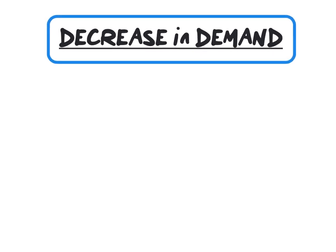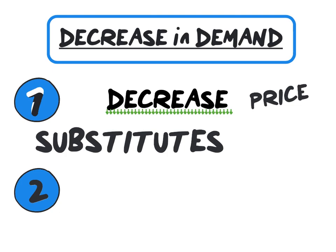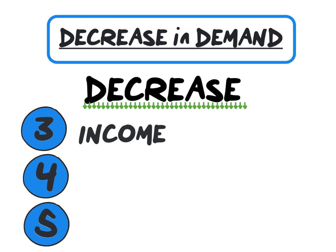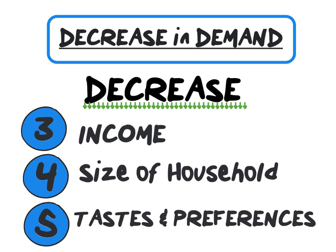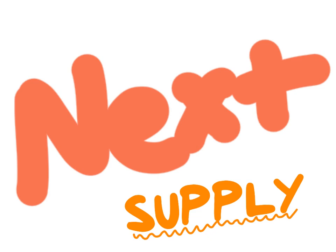To summarize, a decrease in demand can be caused by a decrease in the price of a substitute good, an increase in the price of a complement good, a decrease in the level of income, a decrease in household size, and a decrease in taste or preferences towards burgers. Thank you all for joining — that concludes our video for today. Be sure to join me in the next explainer video where we will discuss everything you need to know about supply.